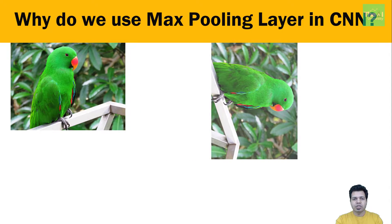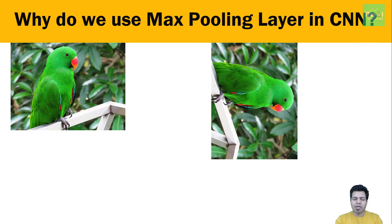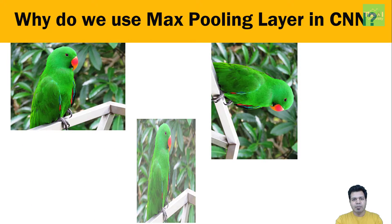Let's rotate this image a bit. Although the orientation of the image has been changed, our CNN model should still be able to recognize the parrot. Now let's compress this image a bit. The object in this image — the parrot — should still be recognized by our CNN model even though the parrot is distorted.